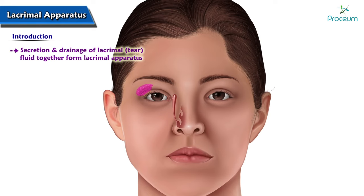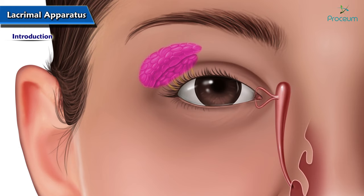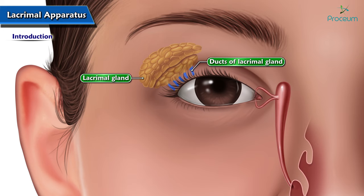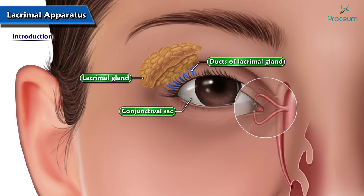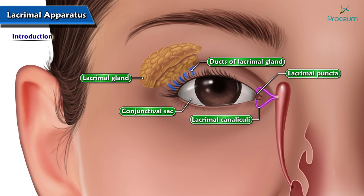The structures concerned with the secretion and drainage of lacrimal tear fluid together form the lacrimal apparatus. The lacrimal apparatus consists of the following structures: lacrimal gland, ducts of the lacrimal gland, conjunctival sac, lacrimal puncta, lacrimal canaliculi, lacrimal sac, and nasolacrimal duct.